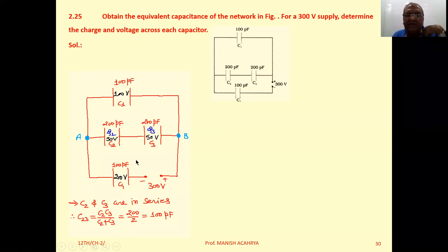Resultant capacitance of the series combination C23 equals C2*C3/(C2+C3) or simply C/2 that is 200/2, so 100 pF. We can replace these two capacitors C2 and C3 by only one capacitor having capacitance 100 pF.